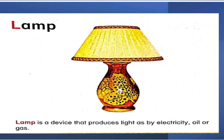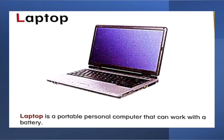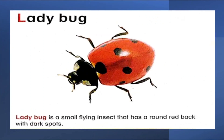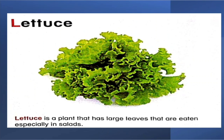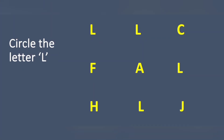Lamp means a bed lamp. L for laptop. L for ladybug — it is an insect. L for lettuce — lettuce is actually like salads, like coriander, but not coriander.